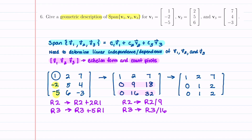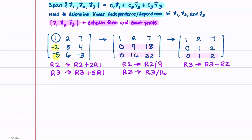Whenever you have a row that's a repeat of another row, that row is going to go to zero, because we would take row 3 and replace it with row 3 minus row 2. So whenever you see a repeated row, you can automatically know it goes to 0. Writing that down: our first two rows stay the same — 1, 2, 7 and 0, 1, 2 — and then 0, 0, 0.